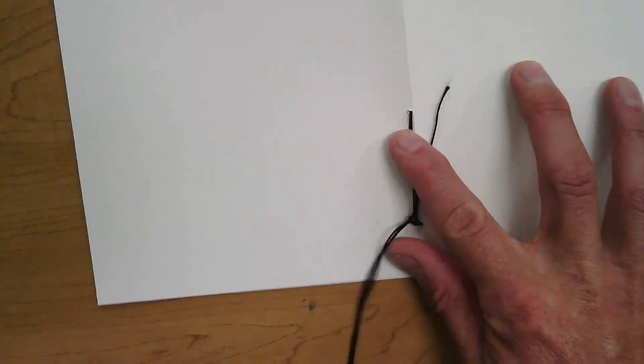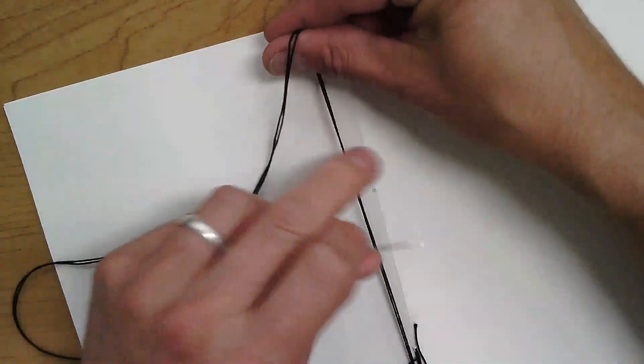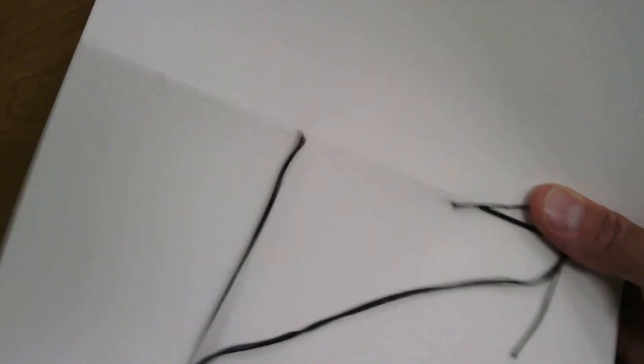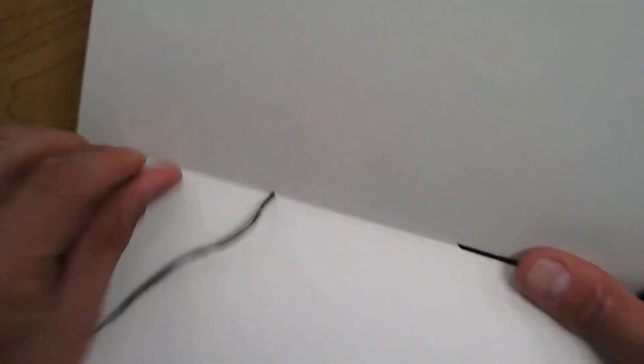We're not pulling it super tight because we don't want this to rip. This is just to hold. Next, I'm going to go all the way down here. We're going to pull it taut but not tight. Then I'm going to flip it over and come through this side.